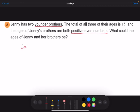So Jenny plus brother number one plus brother number two is an odd number. And we know that the two brothers are both positive even numbers. And we know that even number plus even number is still an even number.